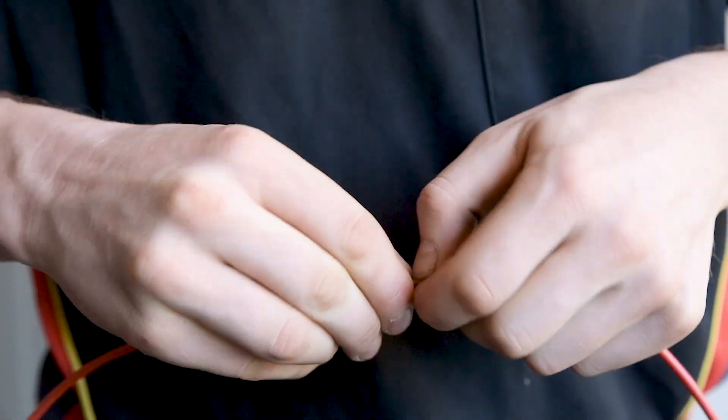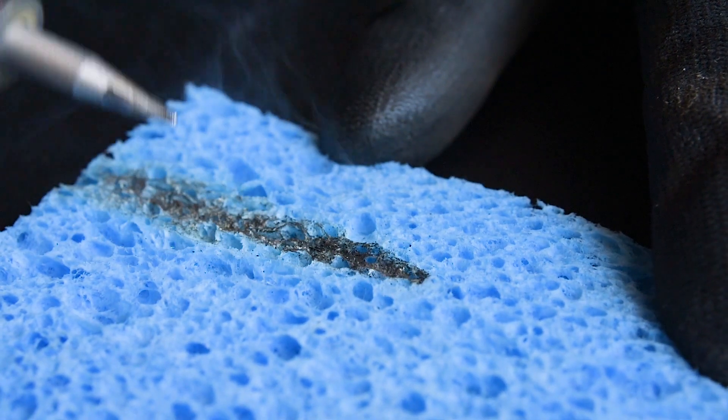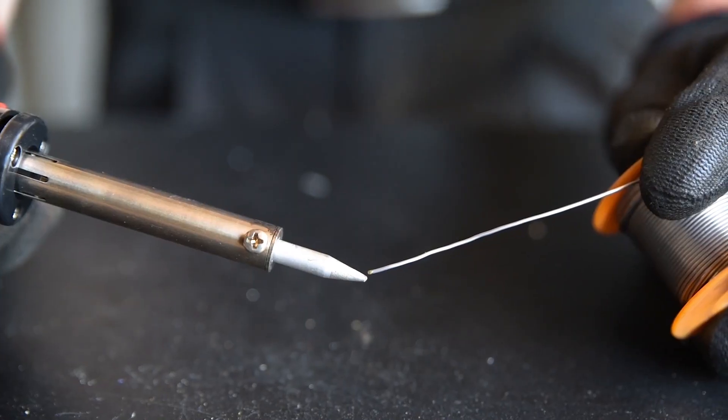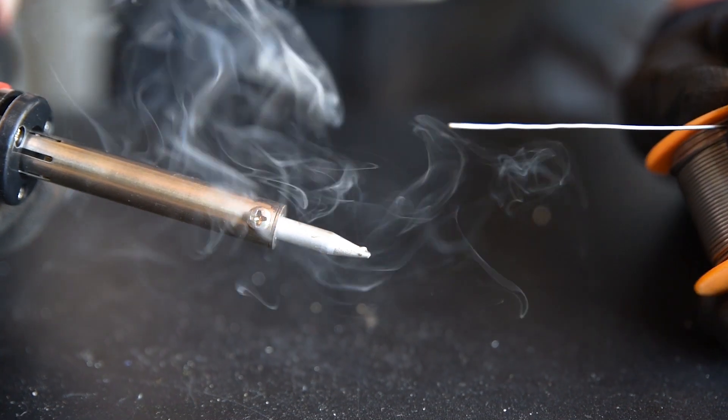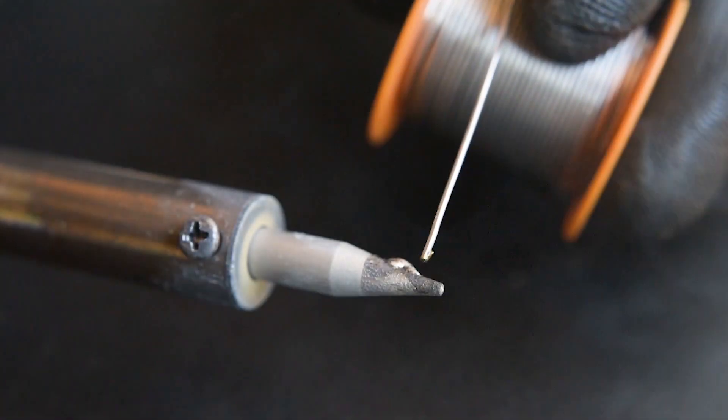If the soldering iron has been used before, wait until it's hot and wipe the tip on a damp sponge to clean off any old solder. Tin the tip of the iron by applying a little solder to it. This will improve conductivity and make the solder flow quicker.